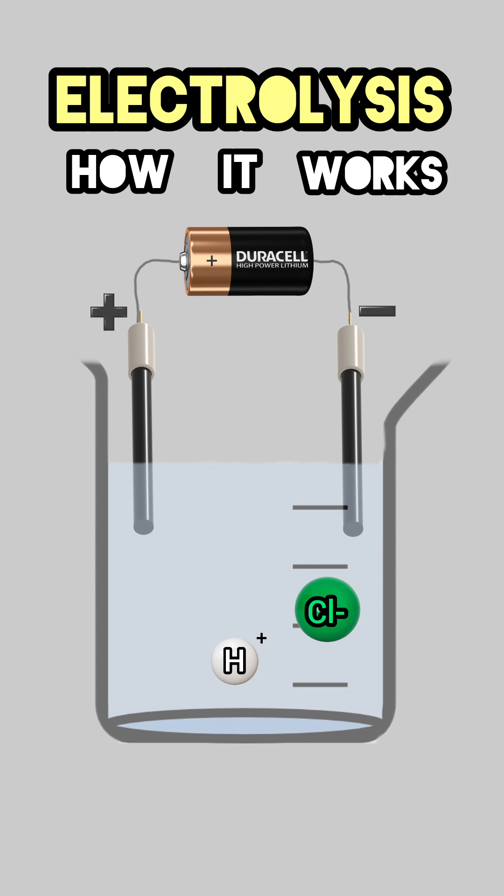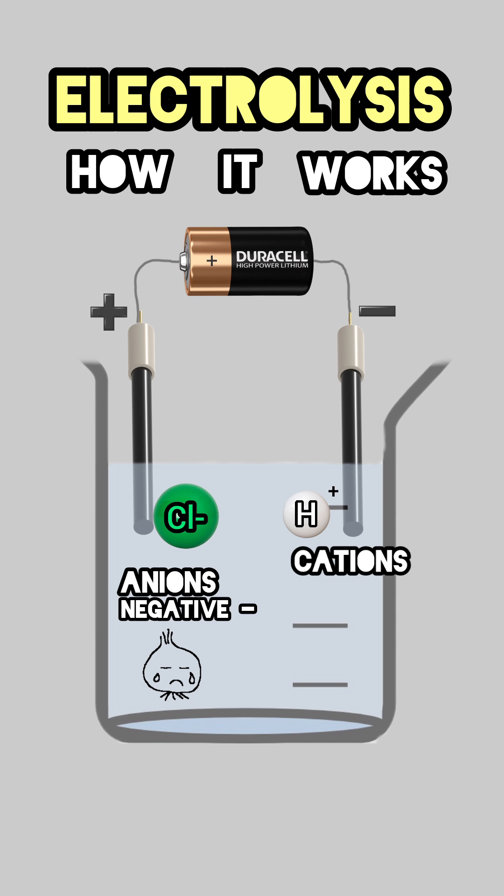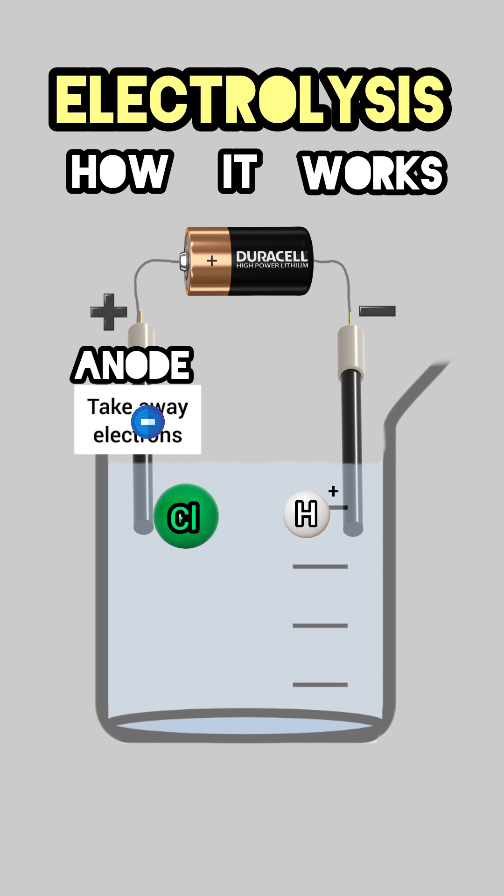They both go to the electrodes, each one to the opposite charge. Anions negative like onions, cations positive like cats. Anodes take away electrons.